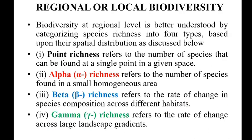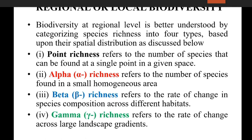Coming to regional or local biodiversity — biodiversity at regional level is better understood by categorizing species richness into 4 types based on their spatial distribution. The first one is point richness, which refers to the number of species that can be found at a single point in a given space.